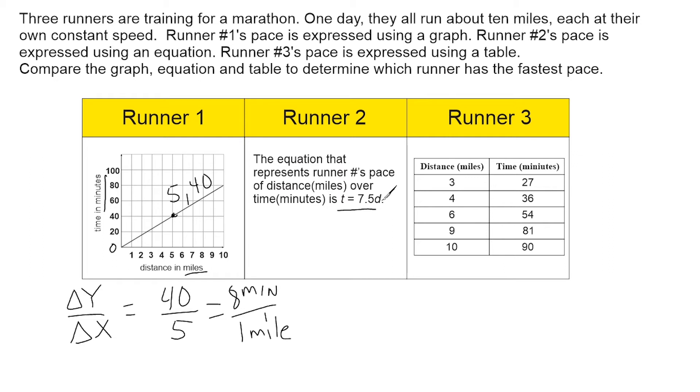Now over here, notice in front of the letter d here, or distance, we have a coefficient. And the value right in front of that variable is our slope. So we can see that this runner's pace is 7.5 minutes to run one mile.